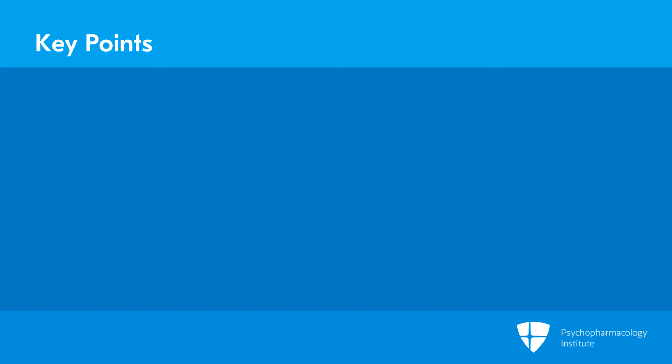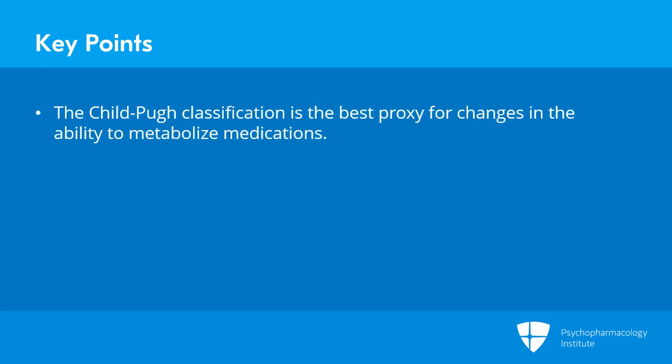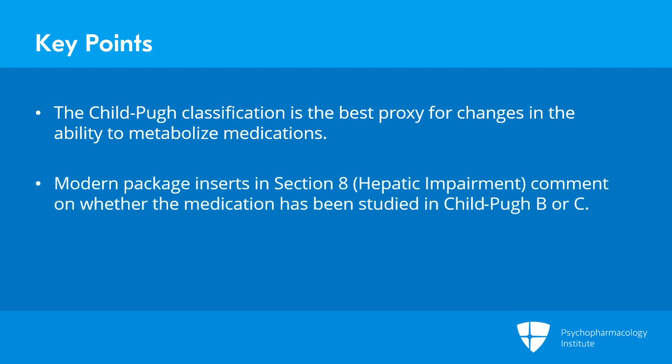As of 2021, the Child-Pugh classification is the best proxy for changes in the ability to metabolize medications. All modern package inserts have been standardized, and in Section 8, which is on hepatic impairment, look at that subsection — it will comment on whether the medication has been studied in Child-Pugh B or C patients, and if so, whether there is a dose adjustment or whether the medication is permitted at all.